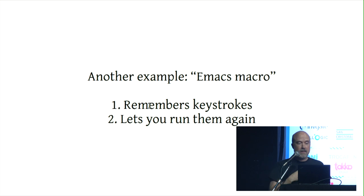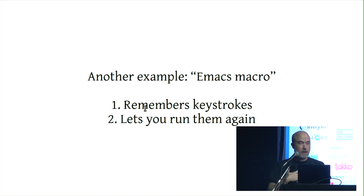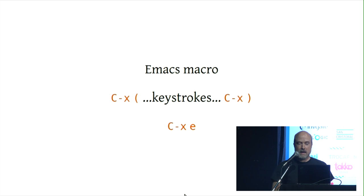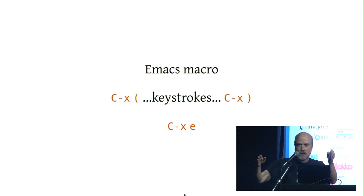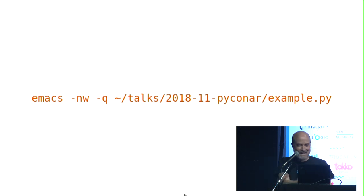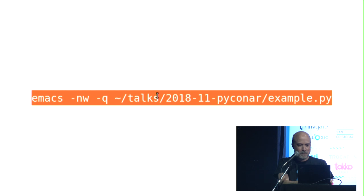Another example that lowers the activation energy of automating a solution is the editor I use. Emacs has something called the Emacs macro — it remembers keystrokes as you type them and then lets you play those keystrokes back over and over again. You use Control-X open-paren to say I am starting a macro, Control-X close-paren ends it, and then Control-X-E to execute it. I have a modest example here. I should paste this command into a terminal. Triple click — very good, I love triple click.